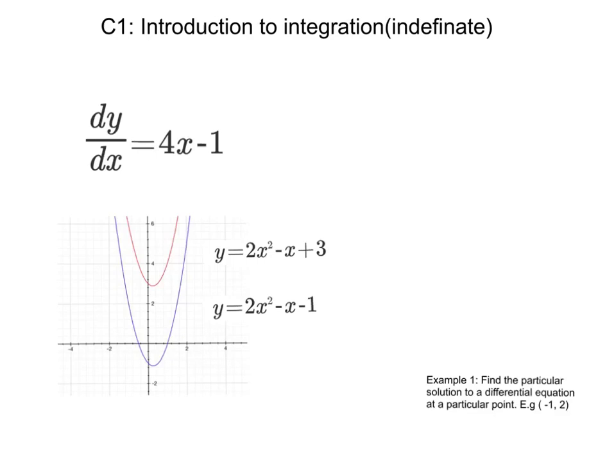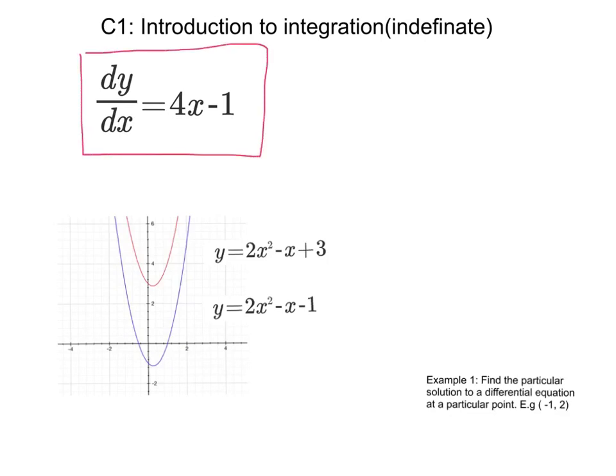So that if, for example here, we have what we're going to call a differential equation, we have the gradient function, he discovered that integration was actually the reverse of differentiation. So that if I integrated this function, I would get back to the original function by doing the reverse of what I first did. So let's think about what we first did. What did this function look like before it was differentiated?